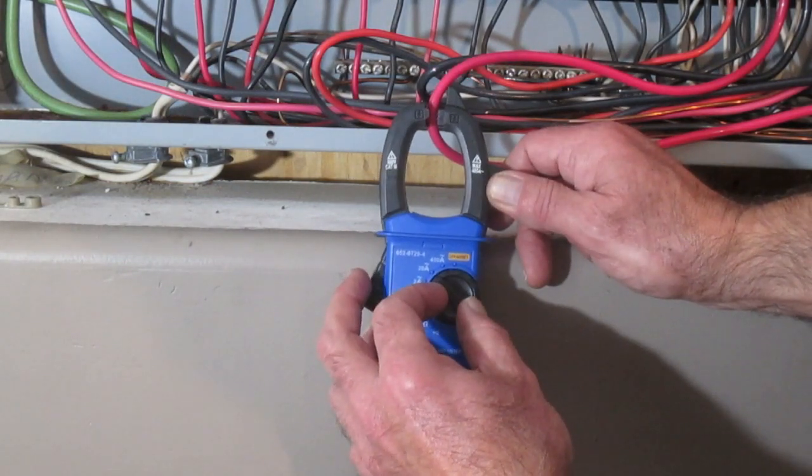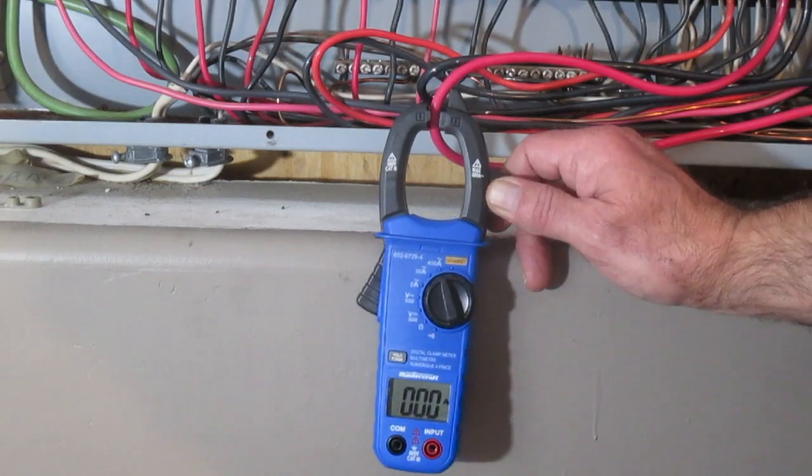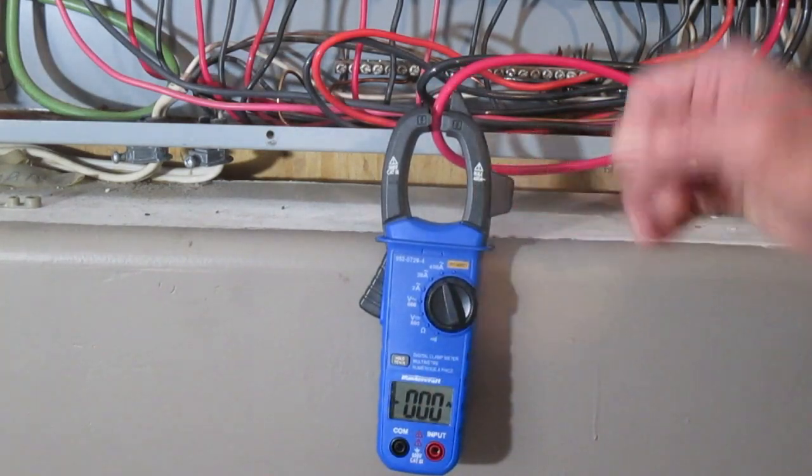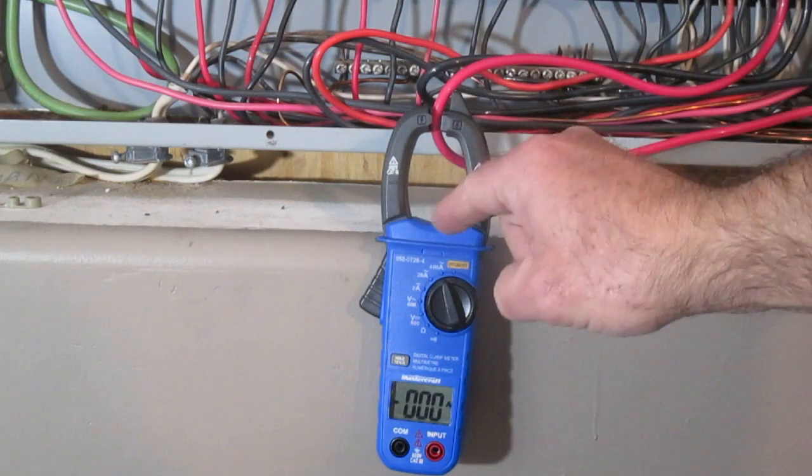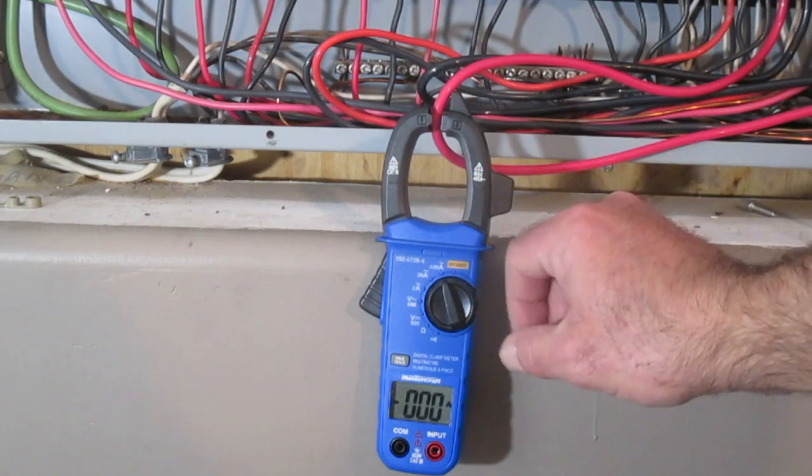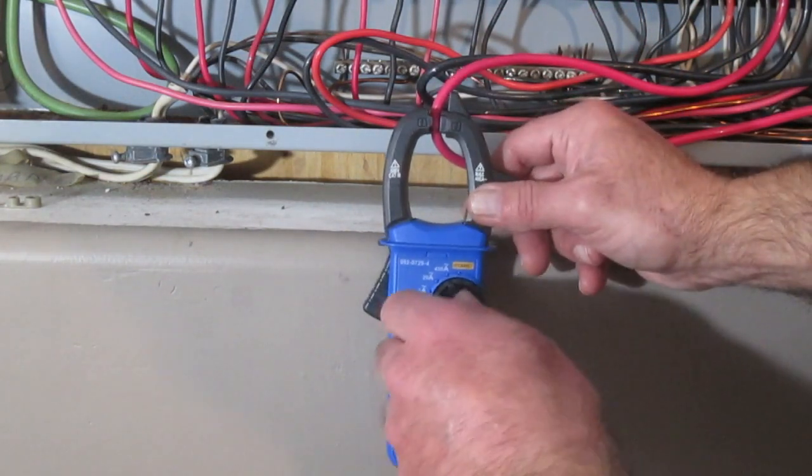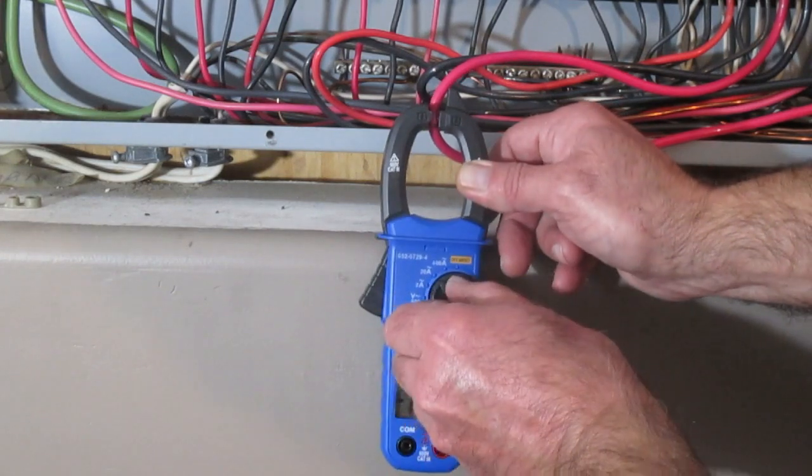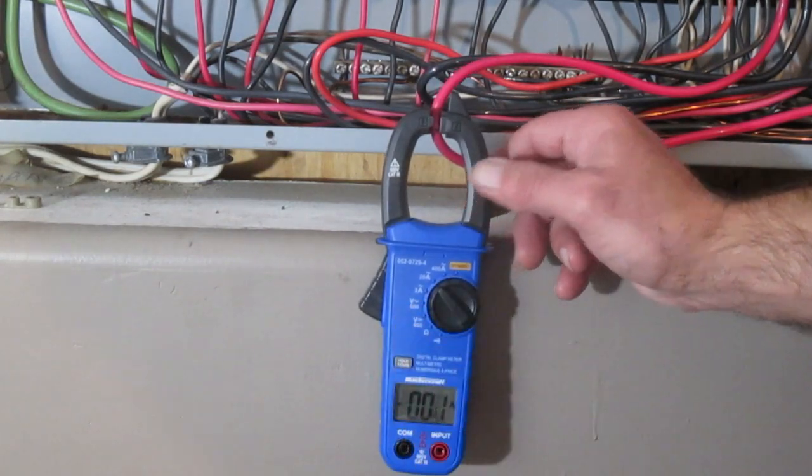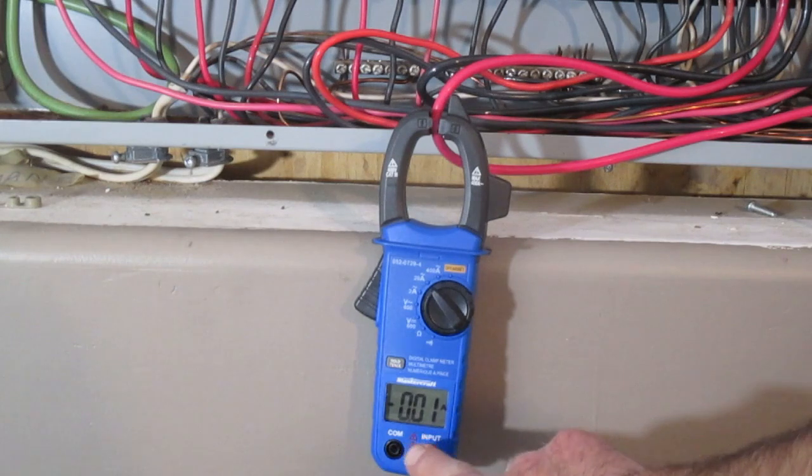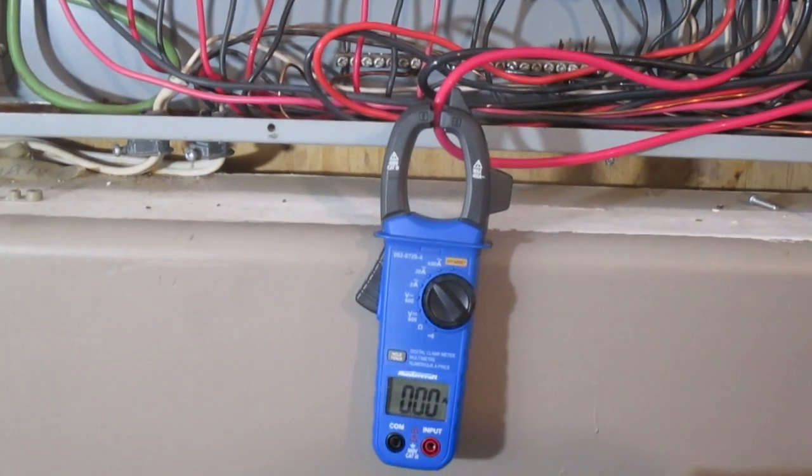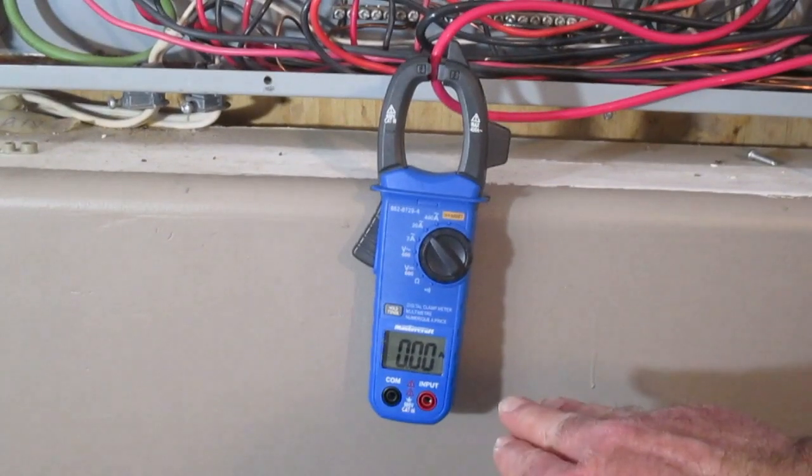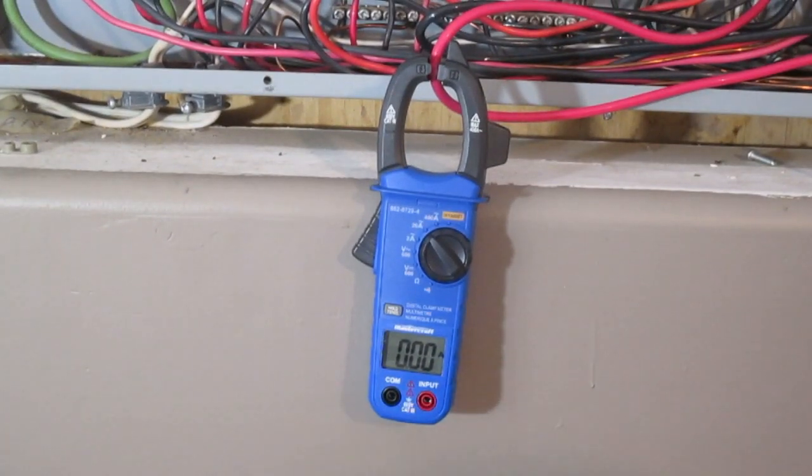Now I know there's no current in that circuit right now because this goes to an electric stove. And what I'm going to do is put it on the 20 amp scale and you can see it's zero point zero zero. There's no voltage there. And I'm going to be back in one second - I'm going to go turn that stove on.